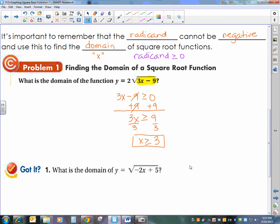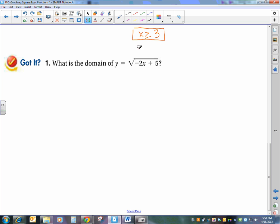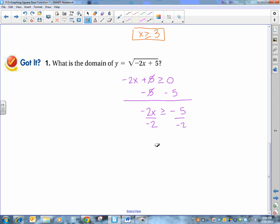What is the domain of y equals square root of negative 2x plus 5? So my radicand, everything underneath that radical, is negative 2x plus 5, which has to be greater than or equal to 0. Subtract 5 from both sides, so negative 2x is greater than or equal to negative 5. Then we're going to divide by negative 2, and x is now less than or equal to 5 halves.